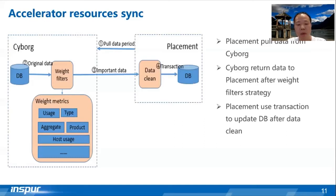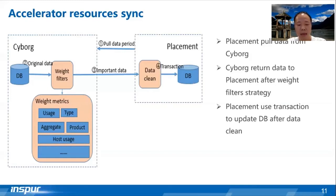The filter method has data filters similar to Nova. The weight metrics are device usage, device type, device aggregate, device product, and device host usage. The filter method will return an accelerator device list with low usage rate filtered by device type, product type, product ID, and the low-usage host which has devices. When placement gets the filtered data, we will use a data clean method to filter valid data — such as checking that the create time is earlier than the update time — and clean devices with in-use status, then use transactions to save data in resource classes, resource providers, traits, and inventories tables. With these measures, data inconsistency for normal cases is greatly reduced.